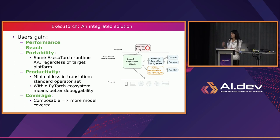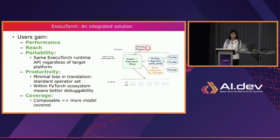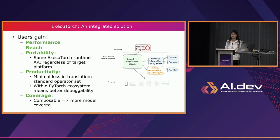The value this brings to PyTorch users is performance. We now have portability because the same APIs can be used for model loading and running regardless of the hardware it is accelerated on — because integration into the ExecuTorch stack means the user-facing API is the same. It also addresses the productivity pain point through standardized tooling with minimum loss in translation. Furthermore, being part of the ecosystem improves performance and functional debuggability.